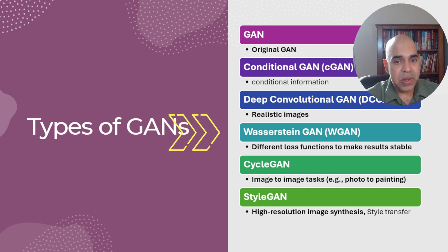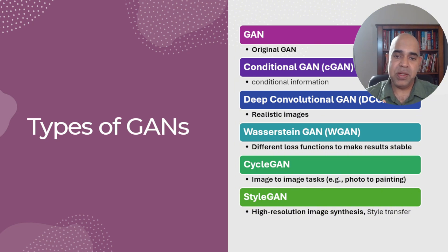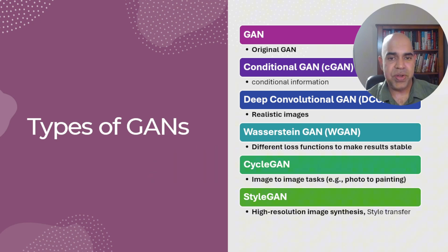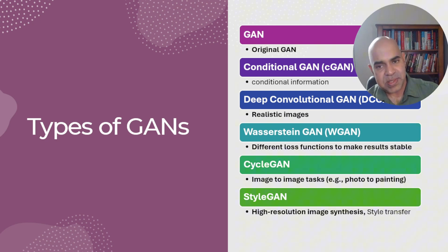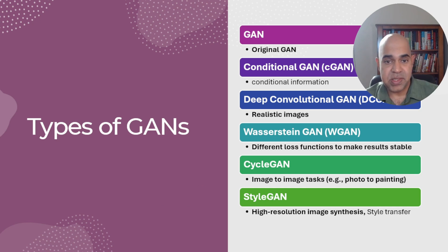Then we have WGAN. WGAN addresses some stability issues in training GANs by using a different loss function, making the training more stable and reducing the occurrences of mode collapse — a problem where the generator produces only a limited variety of outputs. Then there is CycleGAN, designed for unpaired image-to-image translation tasks. It can, for example, transform photographs into paintings or convert daytime images into nighttime scenes without needing paired training examples. StyleGAN is another type that performs high-resolution image synthesis by transferring styles, and has been used to generate photorealistic human faces that do not belong to any real individual.